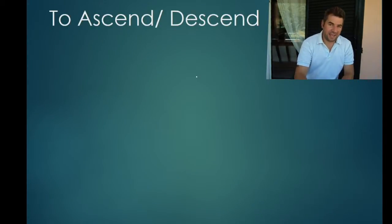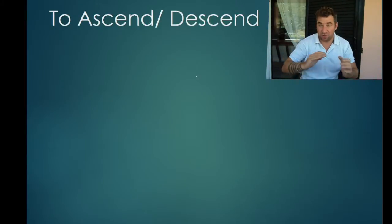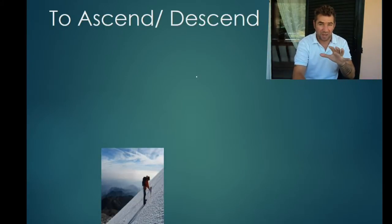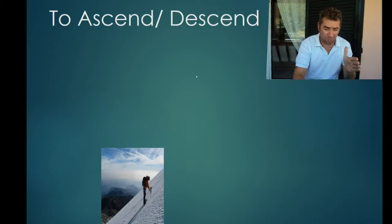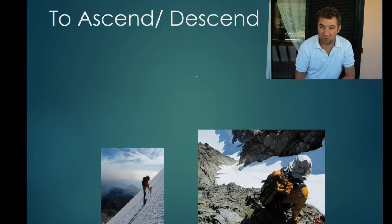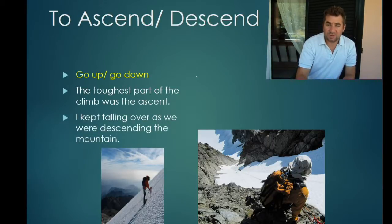To ascend and descend. If you ascend, you are going up. And if you descend, you are going down. You can ascend some stairs or descend some stairs, but we're dealing with mountains. Ascending the mountain is climbing up, which I think is a little bit harder than descending. Although that looks like no fun at all — beautiful view, but that is going to hurt. And here's descending. If you're descending somewhere like that, you can see just from the picture how dangerous it is — one wrong move, down you go. So ascend: go up; descend: go down. The toughest part of the climb was the ascent. And I kept falling over as we were descending the mountain.